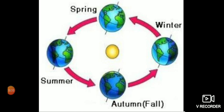Now we are going to continue with our chapter. What is the name of the chapter? Do you all remember? We were learning about rotation and revolution. We had completed those topics and we learnt that the earth rotates around its own axis and revolves around the sun. These are the two movements. Today we are going to see how seasons are caused on earth.